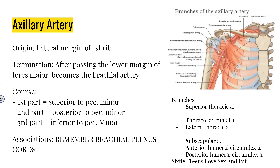The axillary artery is split into three parts. The first part goes from the lateral border of the first rib to the superior border of pectoralis minor, and has one branch: the superior thoracic artery. The second part is posterior to pec minor and has two branches: the thoracoacromial artery and the lateral thoracic artery. The third part goes from the inferior border of pectoralis minor to the inferior border of teres major, and has three major branches: the subscapular, anterior humeral circumflex, and posterior humeral circumflex arteries.